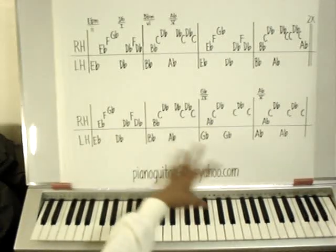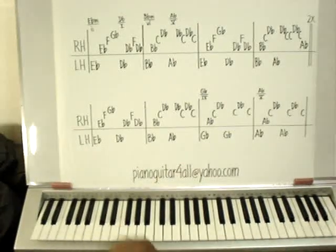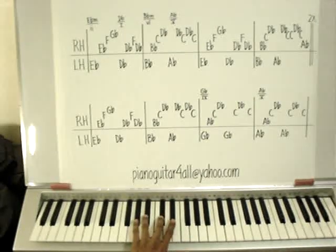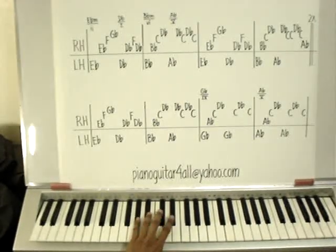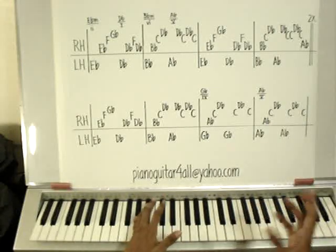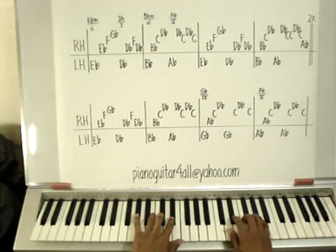Then move to the second line. Let's look at the left hand. It is E flat, D flat, D flat, A flat again. Let's play both hands together slowly.